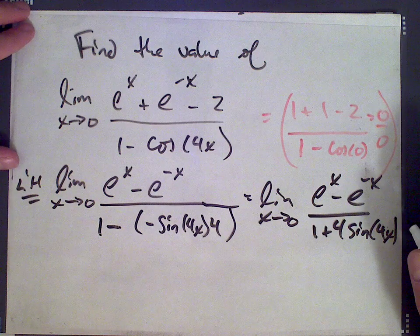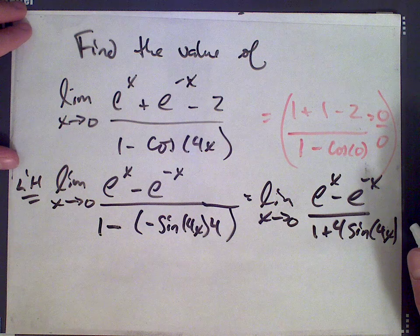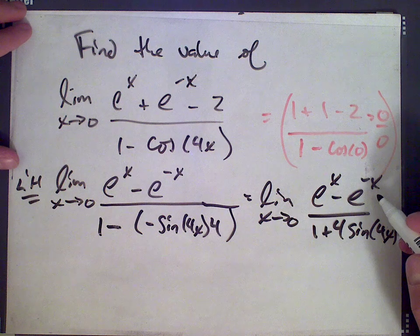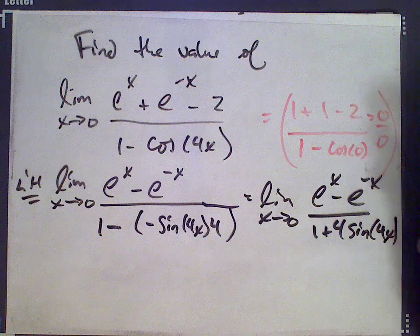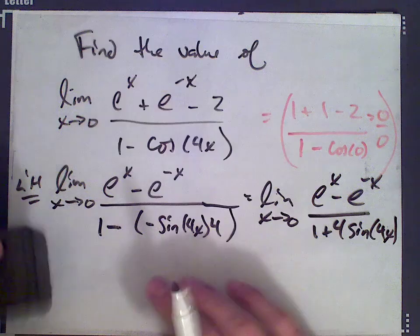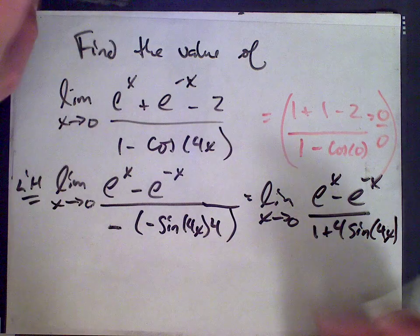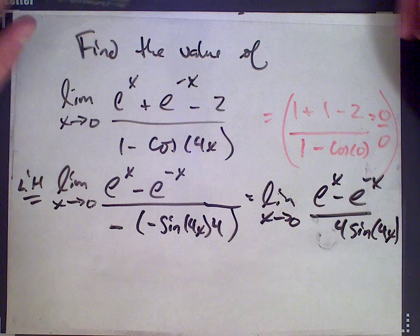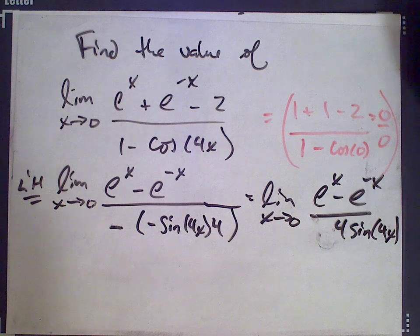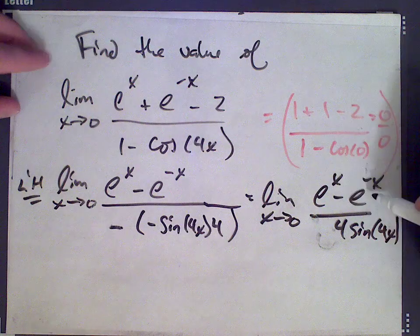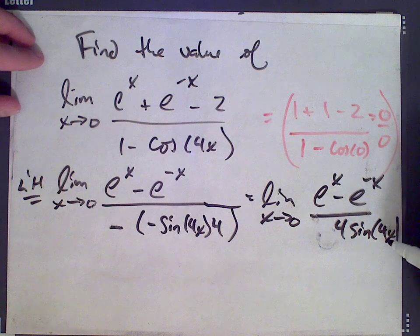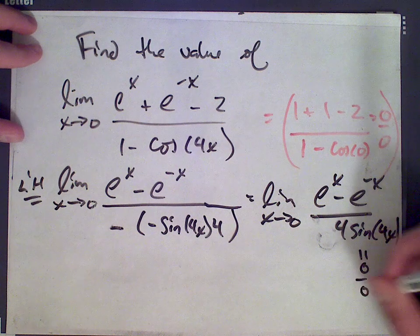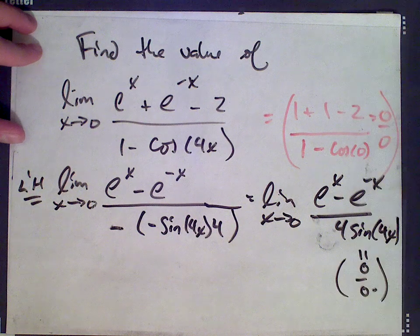If we plug in x equals 0, we get 0 on the top. This is the derivative of the bottom. When we plug 0 in again, we get 1 minus 1 equals 0 on top and sine of 0 is 0, so we get another 0 over 0 form. This is an indeterminate form.